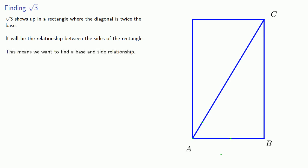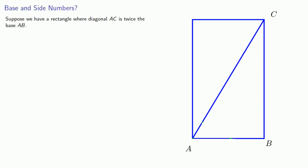And so this means we want to find a base and side relationship. Suppose we have a rectangle where the diagonal AC is twice the base AB. If we subtract side BC from the diagonal, we leave AD.